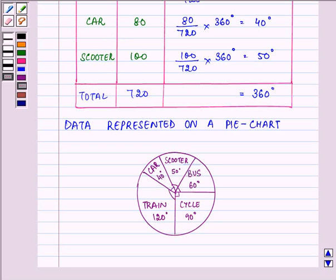So we have the data presented on a pie chart like this. That is 90, 60, 50, 40, and 120 degrees respectively.